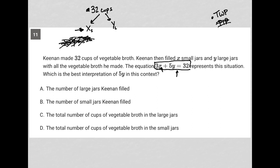Which is the best interpretation of 5Y in this context, the question asks. Well, again, five cups of broth in every large jar is the only thing that would really make sense here. So choice A, the number of large jars Keenan filled, no.